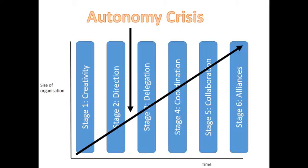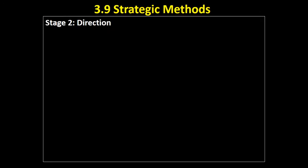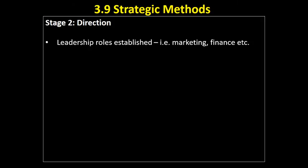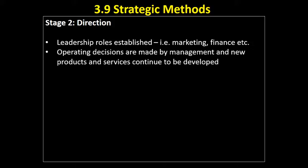When we get some more direction, we might actually come to what we call an autonomy crisis. So in stage two, we've got clear leadership roles established — maybe we've got a head of marketing, a head of finance. We've separated the business from that informal, loose structure, and we've got a bit more direction in terms of functional areas. The operating decisions are going to be made by management, still trying to develop new products and services, improve brand image, and satisfy customers. Everyone now should have a clear role within the company, which is good for consistency and order.